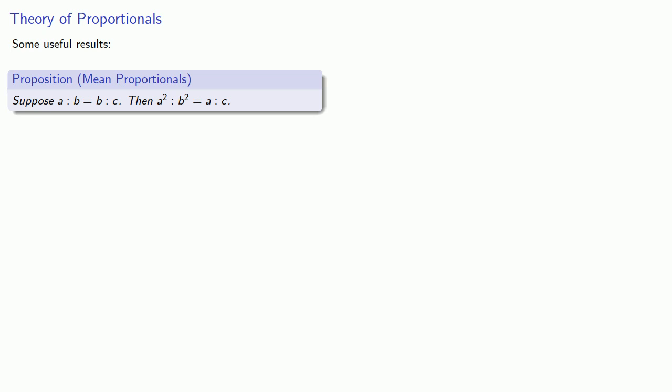And what's the point of introducing a whole bunch of propositions if we don't use them? Let's go ahead and do this entirely within the theory of proportionality. So we know that a is to b as b is to c.